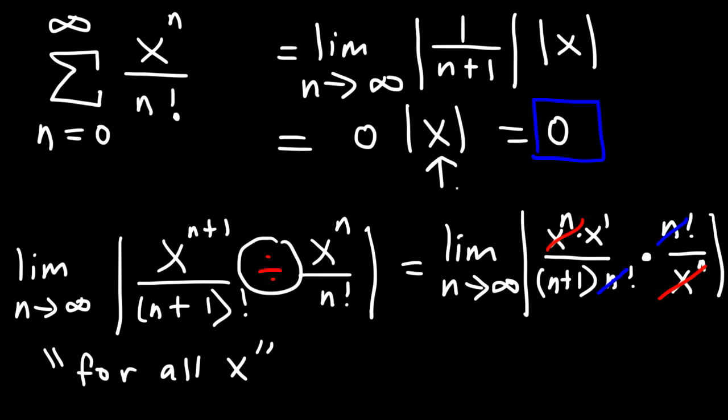Since the limit equals 0, which is always less than 1, the series converges for all x values. Regardless of what x is — whether it's 2, 8, 25, or negative 4 — all those fixed values multiplied by 0 equal 0. So for any x value, the series will converge. The radius of convergence is infinity, and the interval of convergence is negative infinity to infinity.